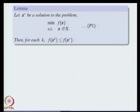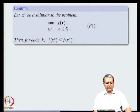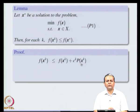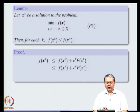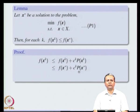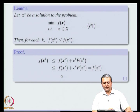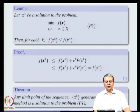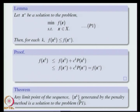If x* is the solution, then f(x_k) ≤ f(x*) for every k. This is easy to show: since c_k > 0 and p(x_k) ≥ 0, we have f(x_k) ≤ f(x_k) + c_k·p(x_k) ≤ f(x*) + c_k·p(x*), and by definition of the penalty function p(x*) = 0 since x* is feasible, so f(x_k) ≤ f(x*). Using these two lemmas, we can prove the theorem that any limit point of the sequence x_k generated by the penalty method is a solution to the problem.